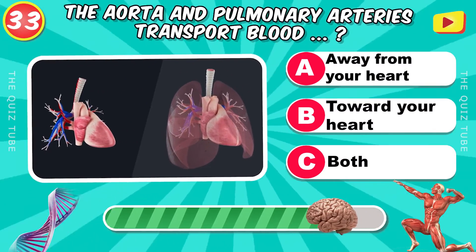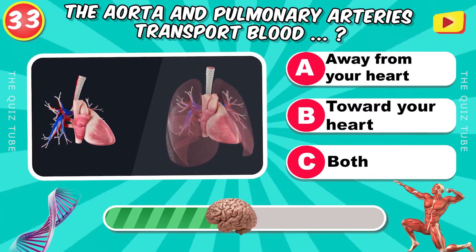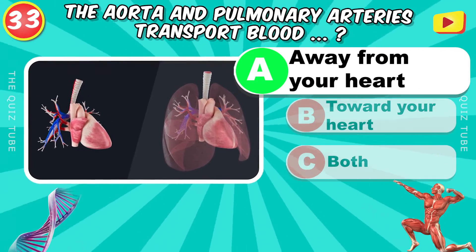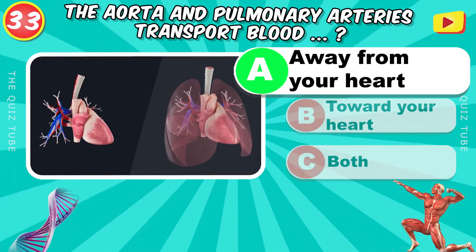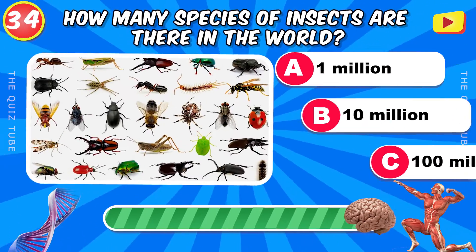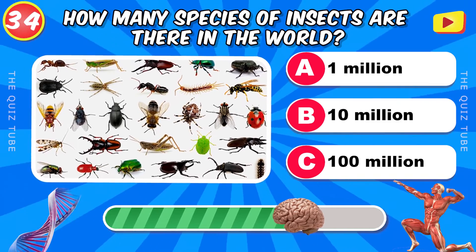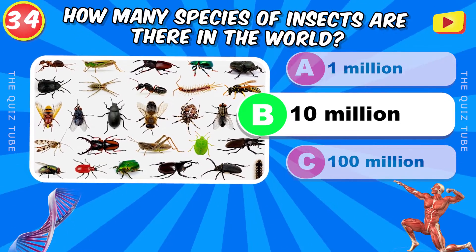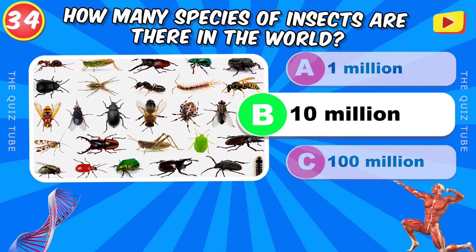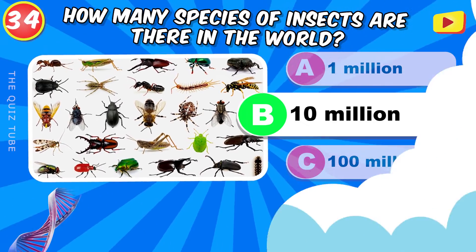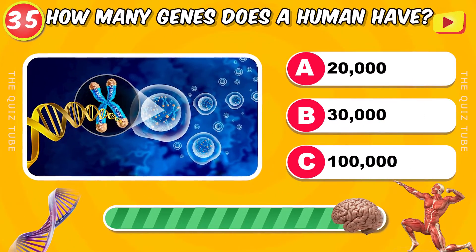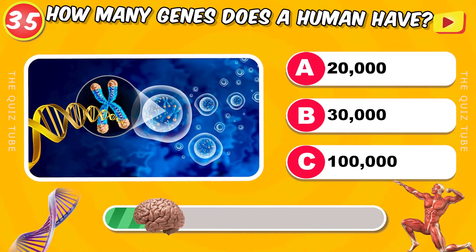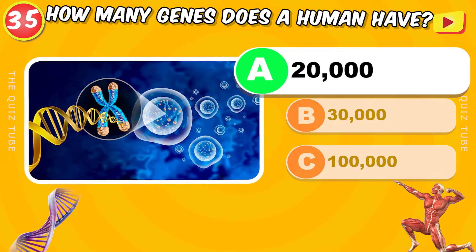The aorta and pulmonary arteries transport blood away from your heart. How many species of insects are there in the world? There are almost 10 million species. How many genes does a human have? 20,000 genes.